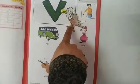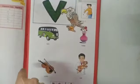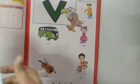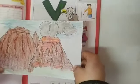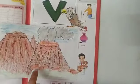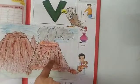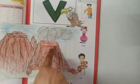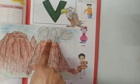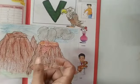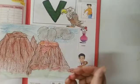Vulture is a bird. V is for volcano. Kids, volcano is a mountain jiski top pe hole hote hain, aur jisse steam and melted rocks jo hoti hain woh bahar nikalti hain.